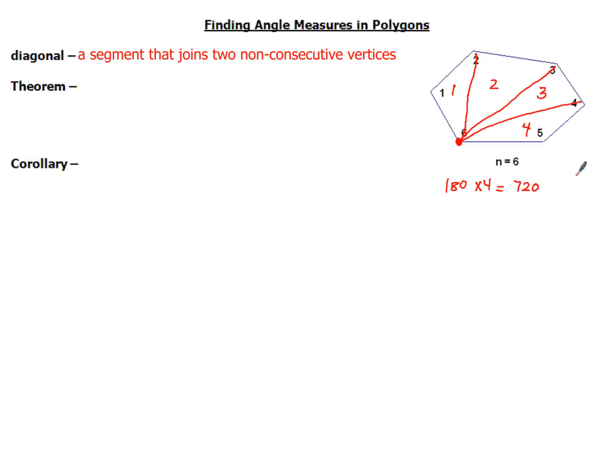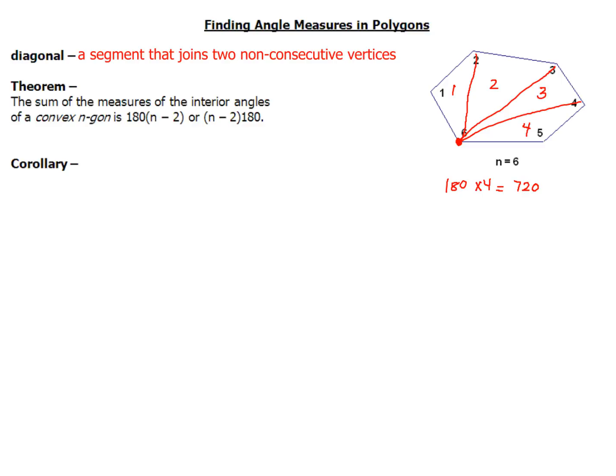So in this particular figure, the sum of angles one, two, three, four, five, and six would be 720 degrees. With that said, this gives rise to a theorem.